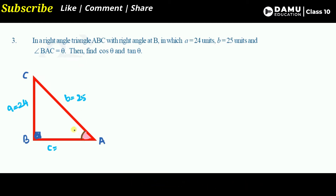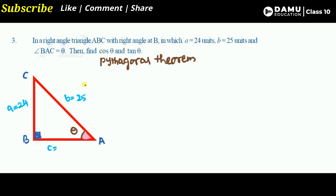We need to find cos theta and tan theta. To find cos theta, we need the adjacent side and the hypotenuse. First we need all three sides, so we apply the Pythagorean theorem: the hypotenuse squared equals the sum of the squares of the remaining two sides.